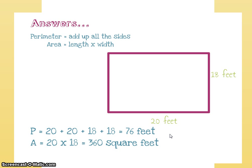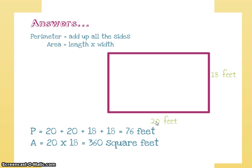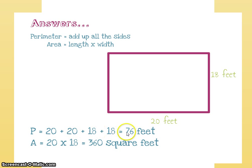Let's figure out the answer. For perimeter, we simply add up all the sides. I have 20 feet in length and 18 feet in width. I'll assume this side is also 20 feet and this side is also 18 feet. So: 20 plus 20 plus 18 plus 18 equals 76 feet. He would need 76 feet of fencing all the way around his property.